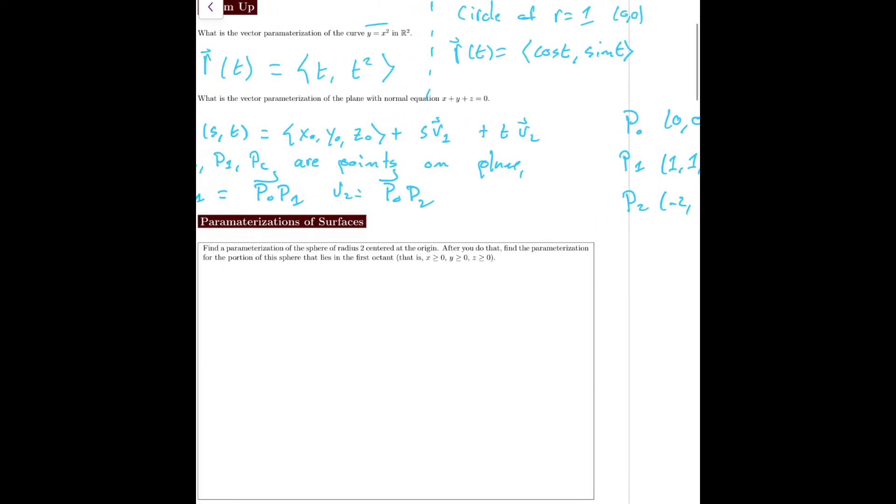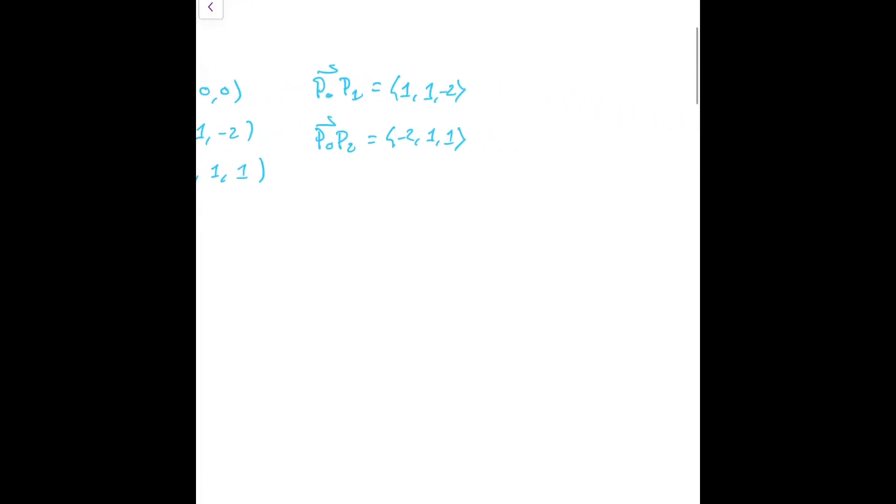So then we could say the parameterization, or a parameterization for the plane, would be r of s, t. The point (0, 0, 0) is on the plane, so this could just be s times (1, 1, -2) plus t times (-2, 1, 1). This is a parameterization for the plane.